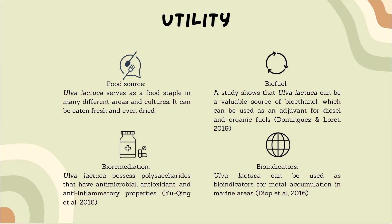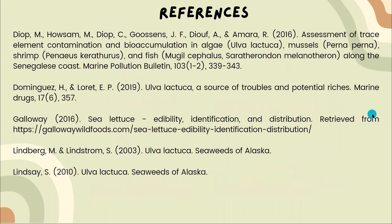What I find most intriguing about Ulva lactuca is its dual nature — it can be used for many beneficial purposes, but it can also be a nuisance in some parts of the world. For example, in New Jersey in the US, there are major problems with Ulva lactuca blooms, which can cause massive die-offs once the algae begins to rot. This dual nature is what makes Ulva lactuca most fascinating to me. That is all — thank you. These are my references.